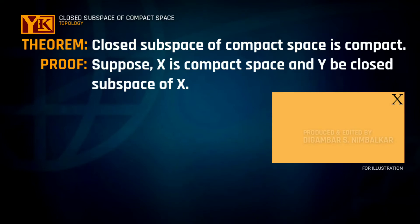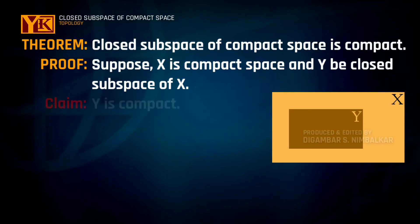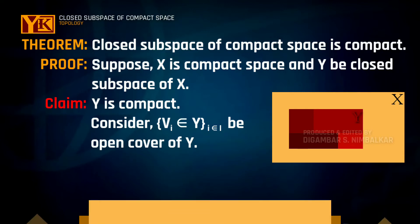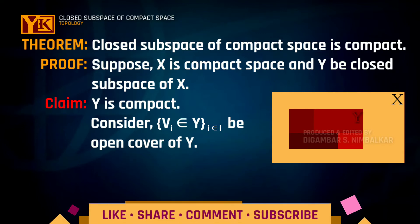Suppose X is a compact topological space and Y is any closed subspace of it. Then our claim is to show that Y is compact. For that, let us consider the collection of Vi's, which are subsets of Y for some i belonging to indexing set I, as an open cover for space Y. We need to show that it has a finite subcover so that Y will be compact.